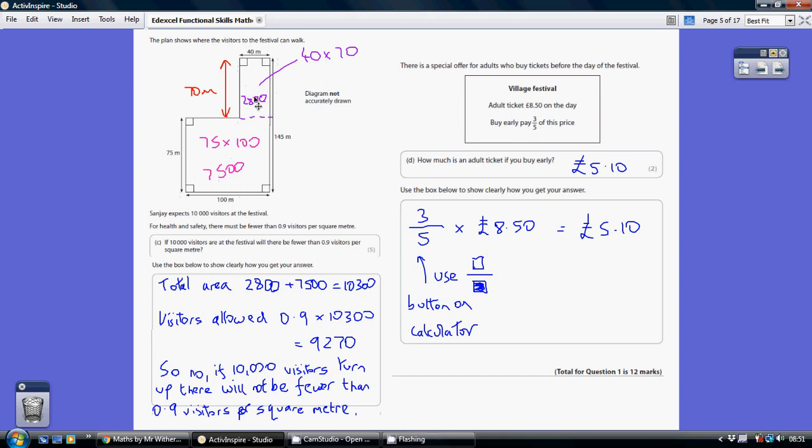So our total area is these two areas added together, which is 10,300. So this is 10,000 visitors per square meter. That's what health and safety allows. So this is our number of square meters. So if we multiply that by 0.9, it gives us the safe number of visitors allowed. And that's 9,270.